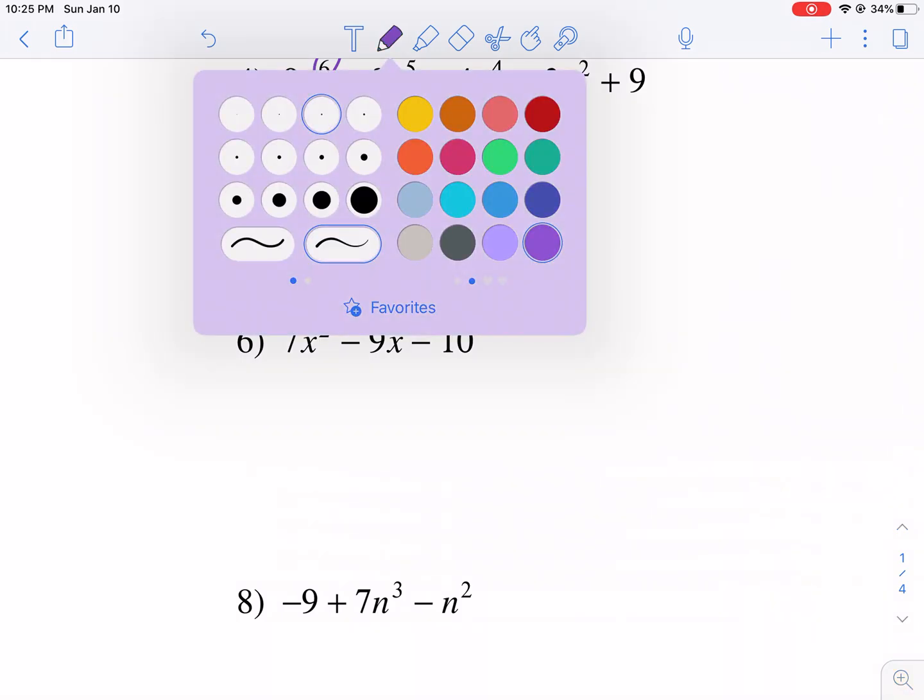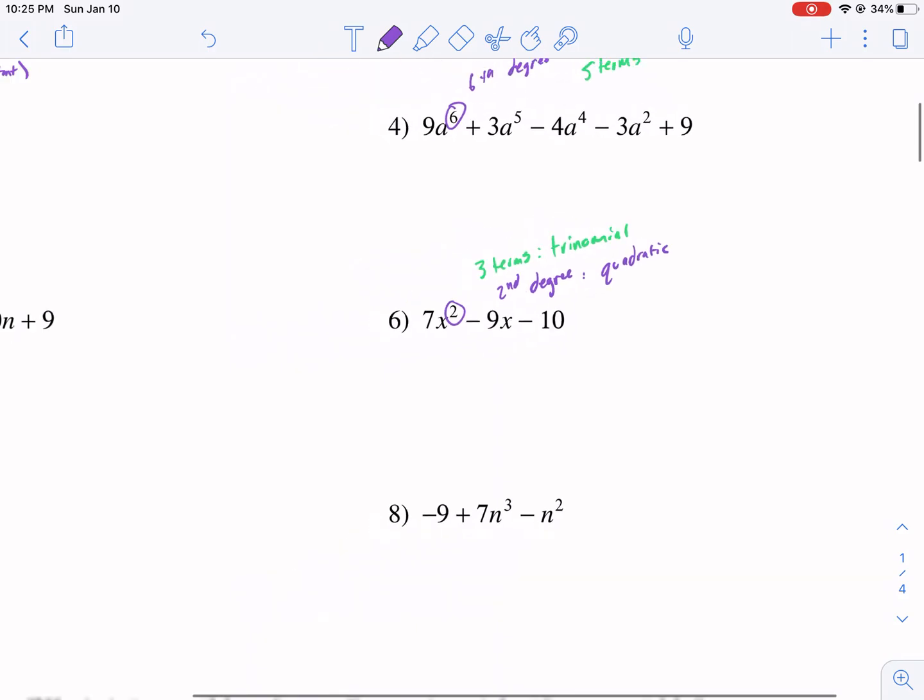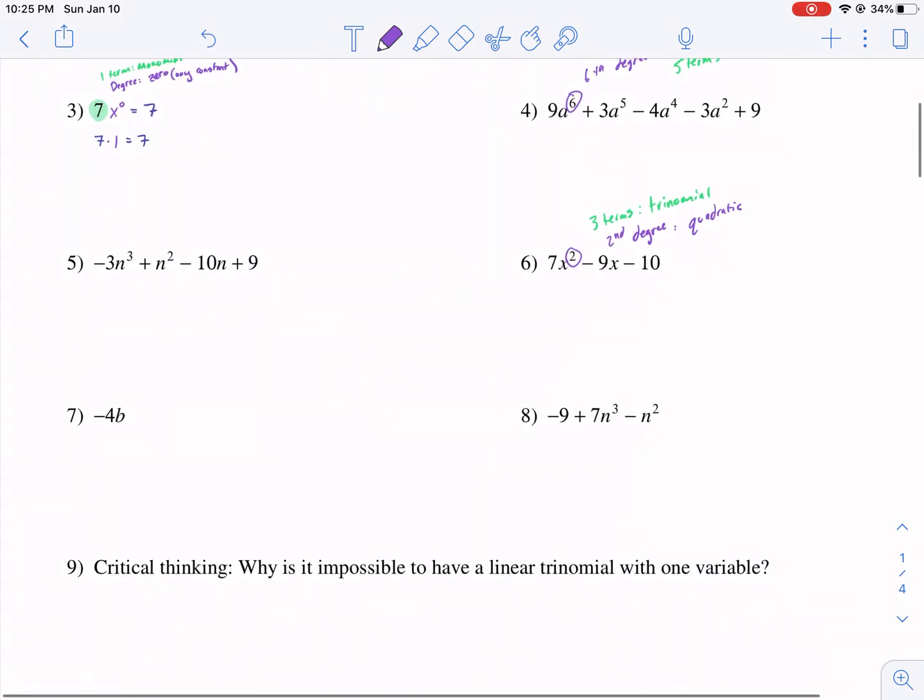And then we have the highest degree is two. So it's a second degree. And usually you should write this in descending order of greatest power two to one to zero. That's called standard form. So second degree is known as a quadratic. Quadratic formula, quadratic.